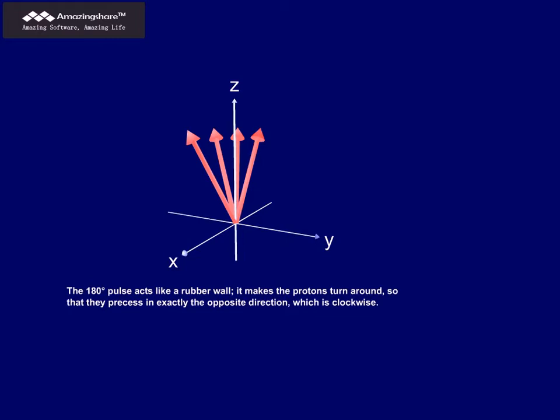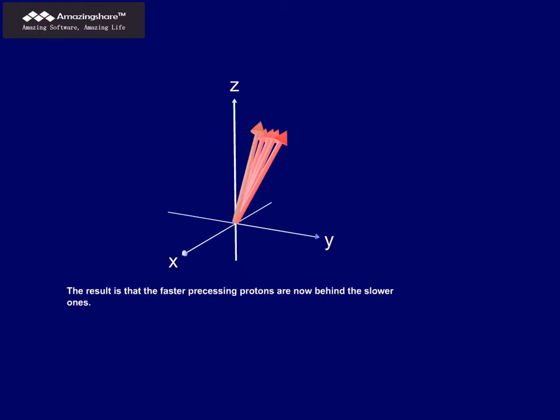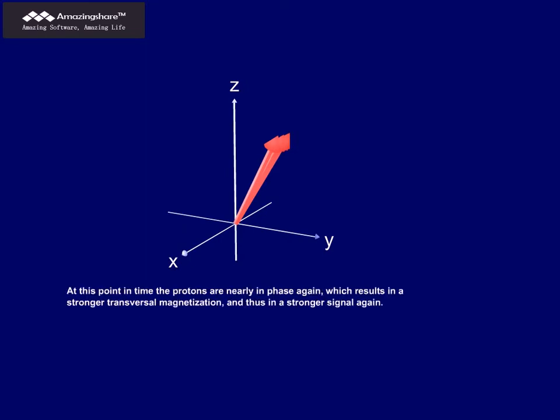The 180-degree pulse acts like a rubber wall. It makes the protons turn around, so that they precess in exactly the opposite direction, which is clockwise. The result is that the fast precessing protons are now behind the slower ones. If we wait another time, half of TE, the faster ones will have caught up with the slower ones. At this point in time, the protons are nearly in phase again, which results in a stronger transversal magnetization and thus in a stronger signal again.